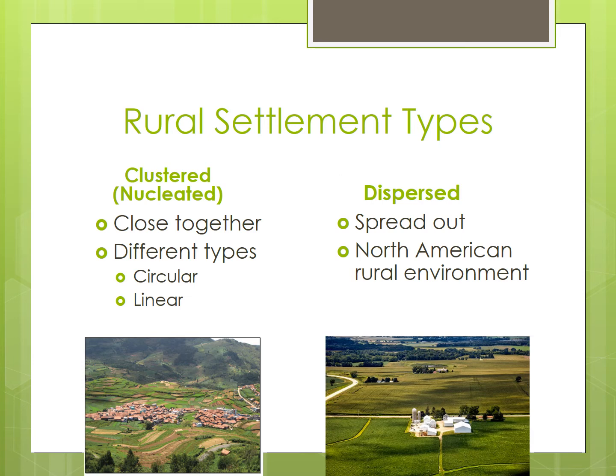Mormon farm villages in Utah provide an excellent example of the clustering force of religion. But generally, North American farmers created dispersed settlements — a pattern in which farmers lived in homes spread out throughout the countryside. This was brought on in part because rural areas were claimed by individual pioneer families rather than by socially cohesive groups. It does offer greater peace and security, while also ensuring fewer disputes over resources such as water.